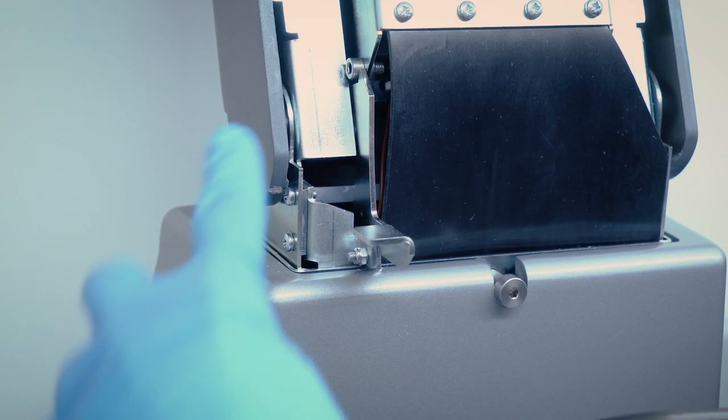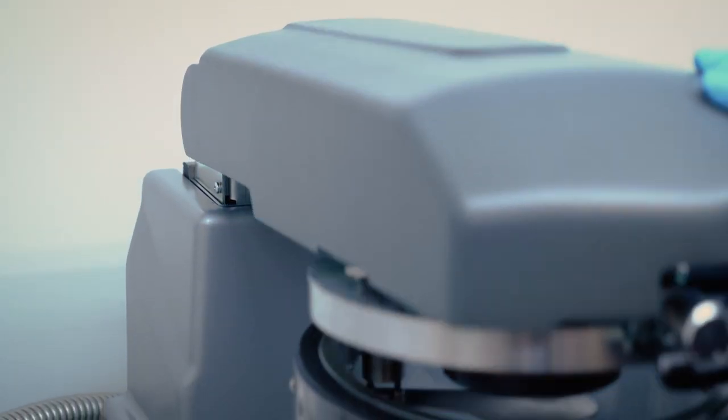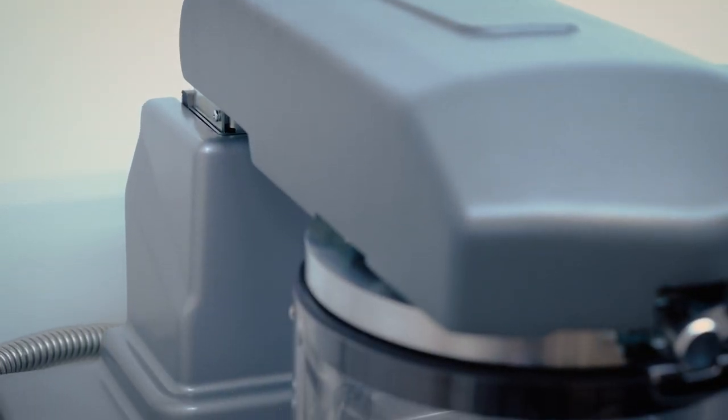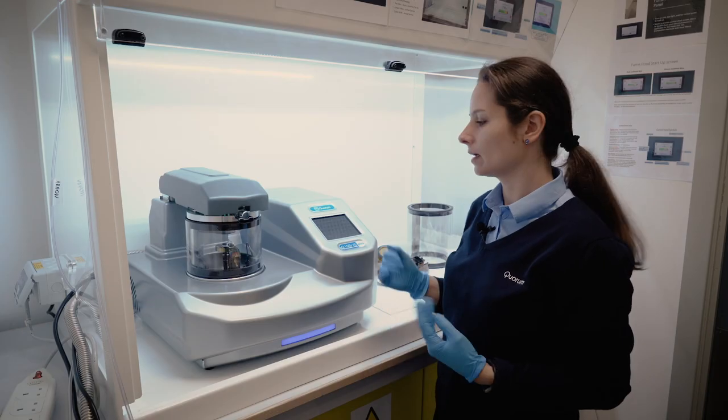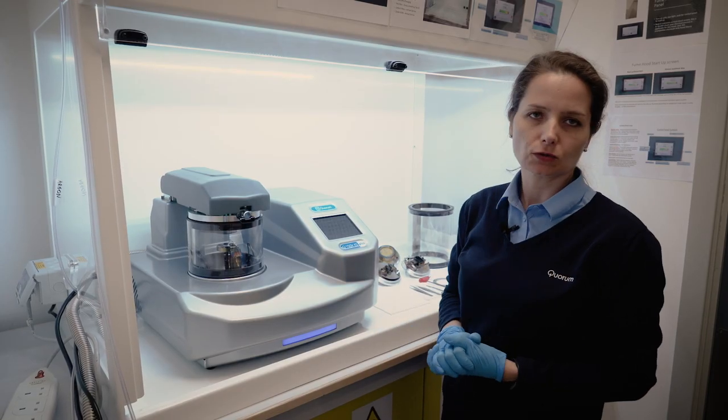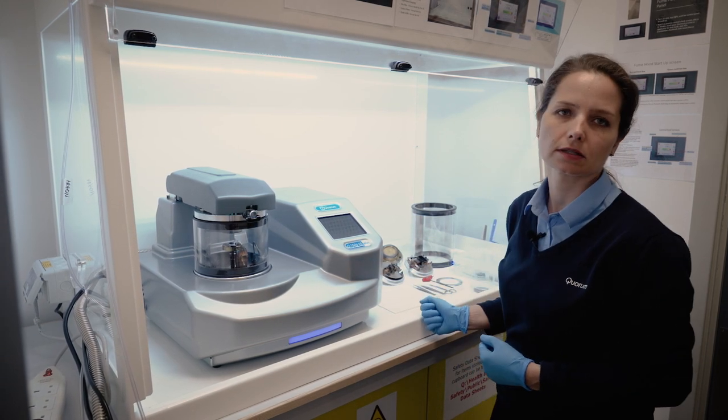There is the safety latch on the lid that we need to disengage to close the lid. The latch prevents the lid to fall and break the cylinder. Now everything is ready to choose the correct recipe parameters and run the process.